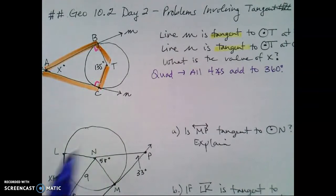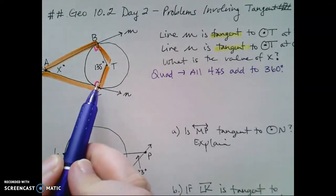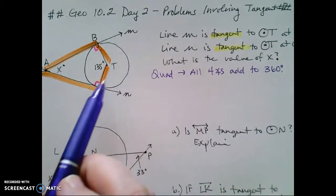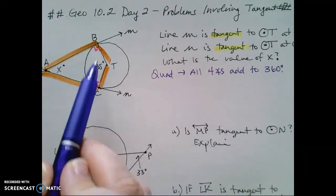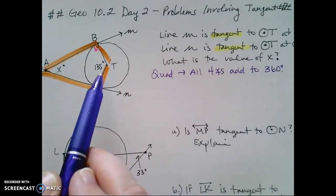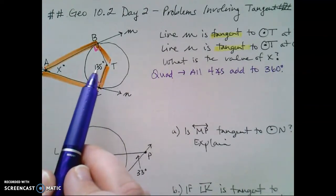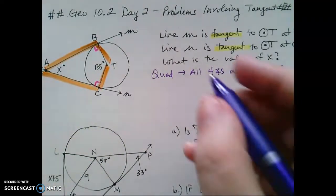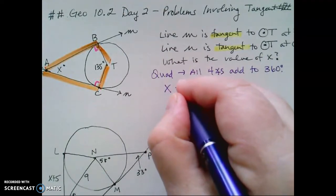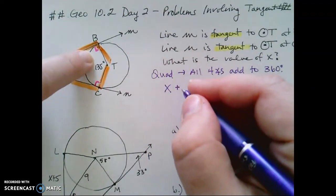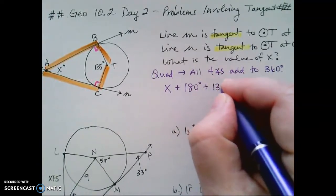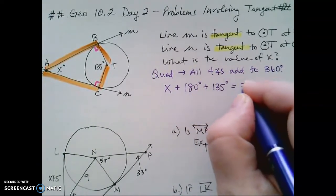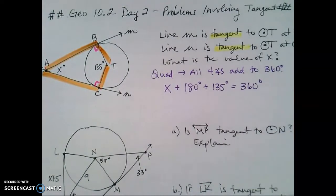And because it's a quadrilateral, I know that all four angles have to add to 360 degrees. And so since I know, because I'm told that these two lines are tangent, I know that these two angles are 90 degrees each. I know that angle T is 135. So I can write a simple equation: X plus two times 90 degrees is 180 degrees, plus 135 degrees has to be equal to 360 degrees.